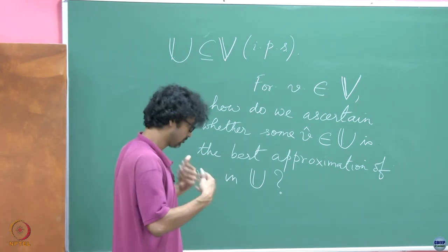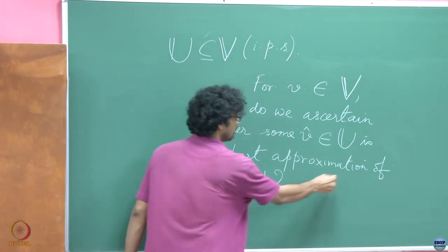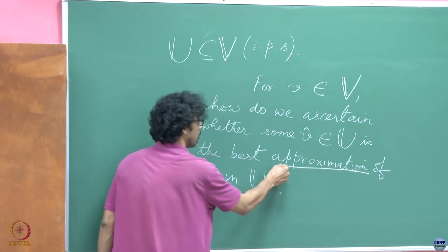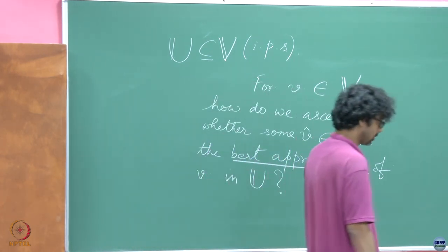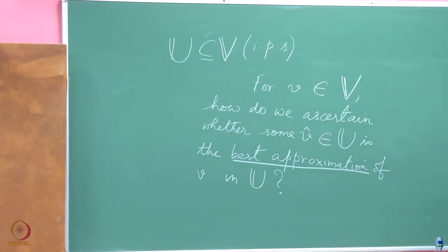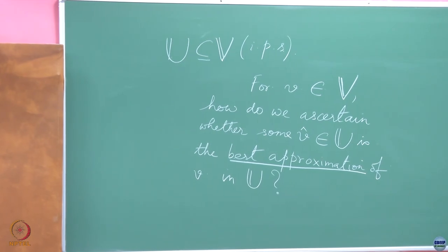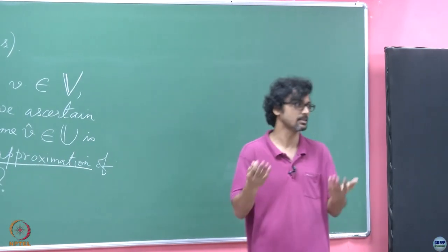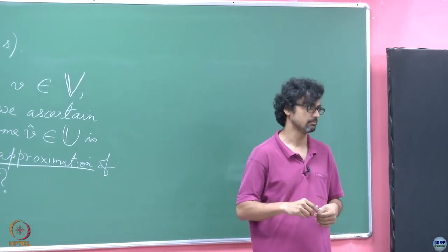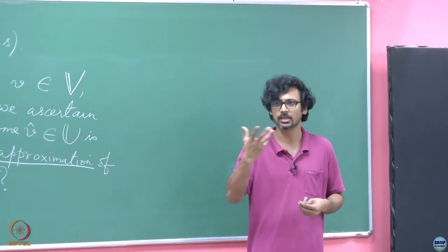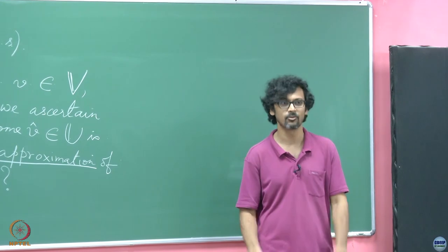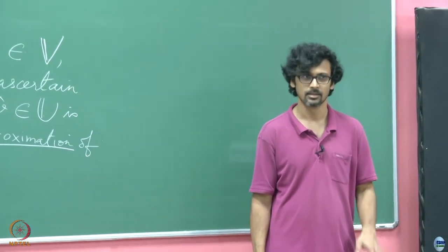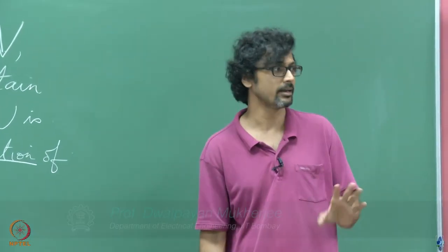There are a lot of things to solve here. What do we even mean by best approximation? About something being the best or something being better than something else - in mathematics there has to be a metric, there has to be a measure, some attribute through which we qualify someone as better than someone else. In mathematics, that has to be something numerical, quantified.